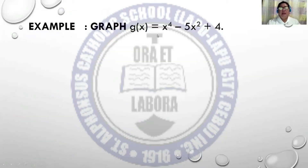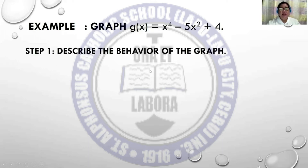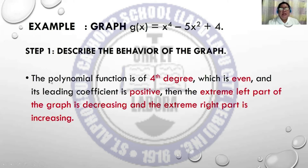Graph the polynomial function g(x) = x⁴ - 5x² + 4. Step 1: describe the behavior of the graph. The polynomial function is of the fourth degree, which is even, and its leading coefficient is positive. Then the extreme left part of the graph is decreasing, and the extreme right part is increasing.